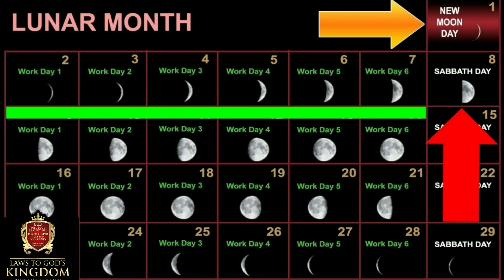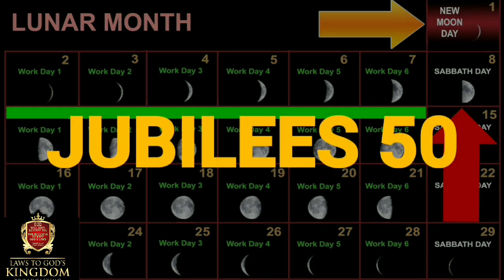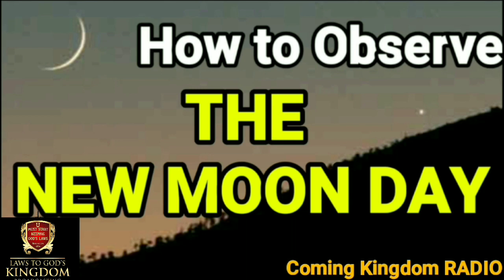On the Sabbath Day, you don't go to work, you don't cook, you worship and you rest. You don't travel on the Sabbath Day. You can read Jubilees chapter 50 to see all the things you can and cannot do on the Sabbath. You can Google the Book of Jubilees and read all the laws about keeping the Sabbath.